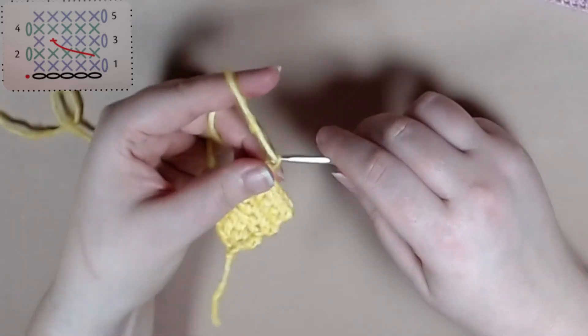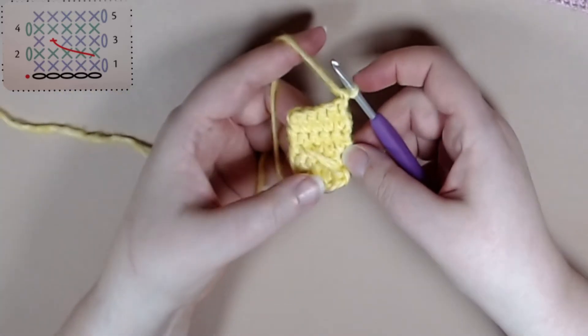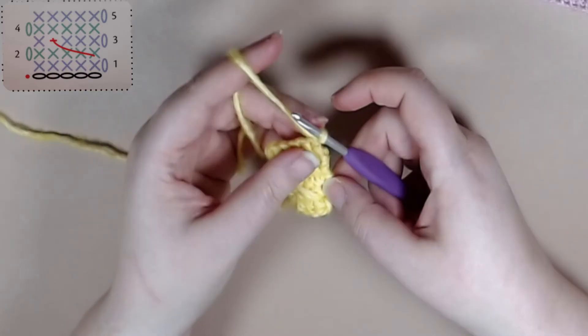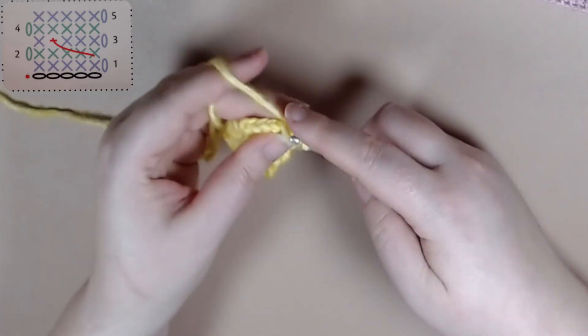Next we're going to chain one and turn our work and we're going to single crochet in the next three stitches just like before.